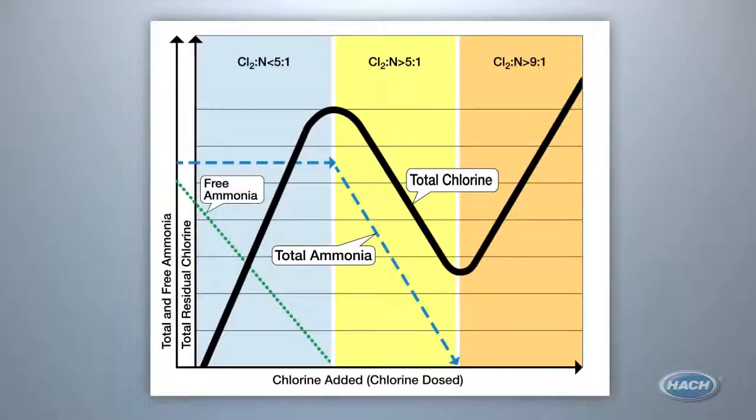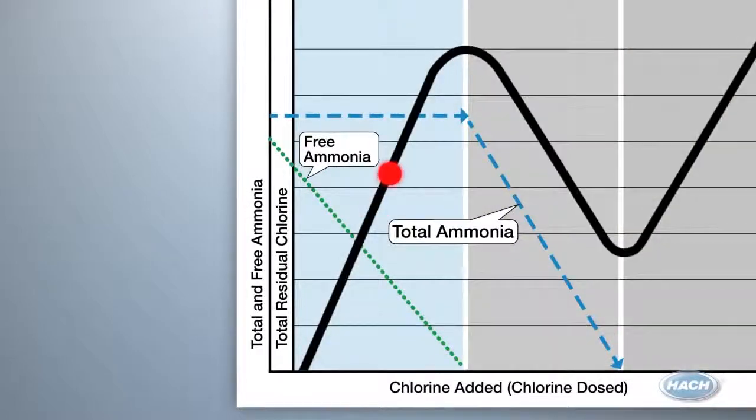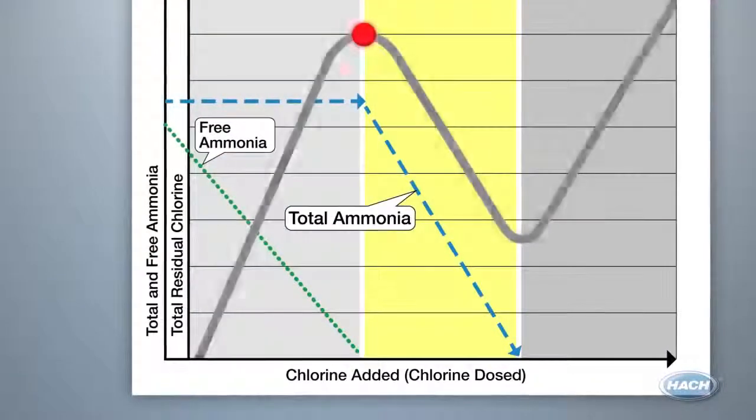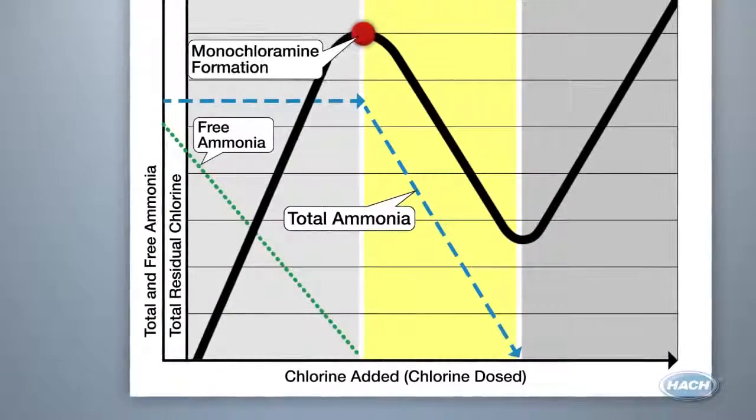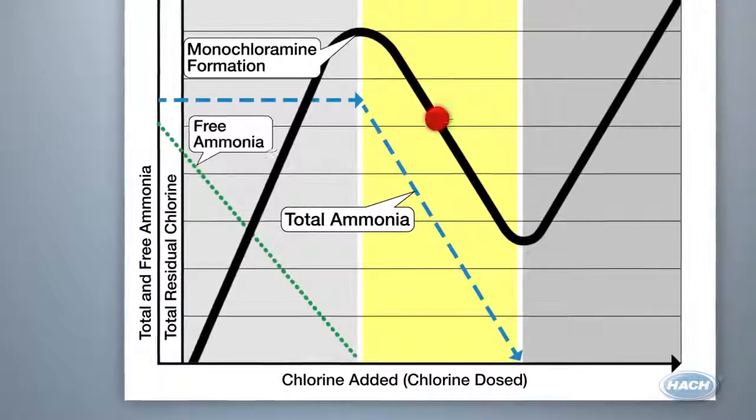So how do you know where your utility's water lies on this chart? Some simple measurements can tell you. For instance, in zone one, you will see total chlorine and a presence of free ammonia. In zone two, you will see total chlorine, monochloramine, total ammonia, but no free ammonia.